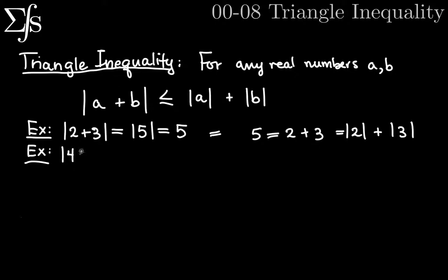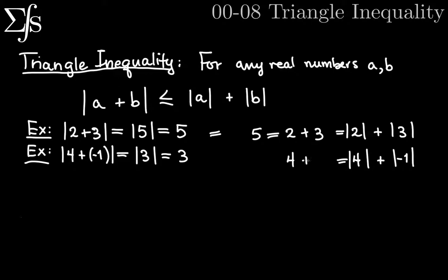Is there a case where they're not equal? Let's take the absolute value of 4 plus negative 1. 4 plus negative 1 is the same as 4 minus 1, which gives me 3. So the absolute value of 4 plus negative 1 equals 3 — that's the left side. On the right, the absolute value of 4 plus the absolute value of negative 1 is 4 plus 1, which equals 5. So 5 is bigger than 3, which is why the triangle inequality uses less than or equal to.